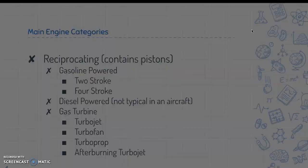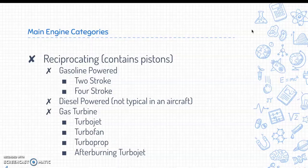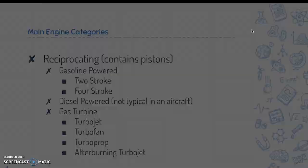The main engine categories are: reciprocating engines, which contain pistons — gasoline powered (including two-stroke and four-stroke) and diesel powered (not typical in aircraft) — and gas turbine engines, which include turbojet, turbofan, turboprop, and afterburning turbojet.